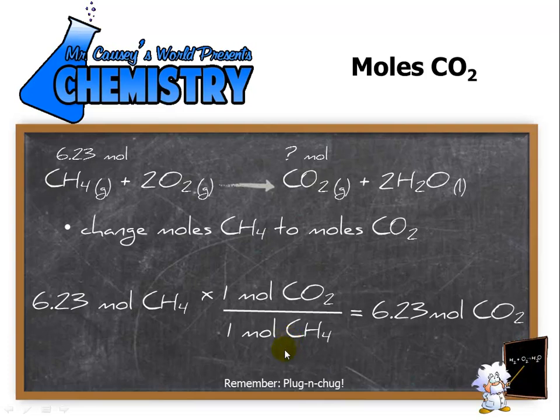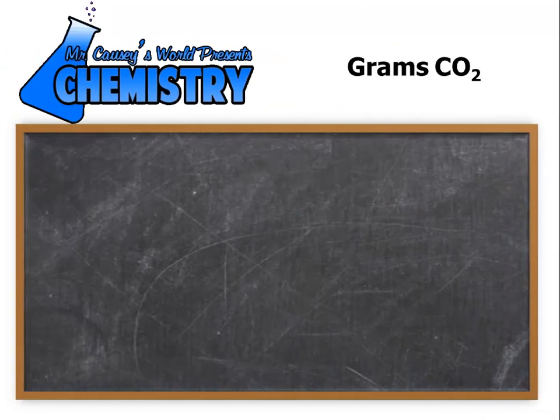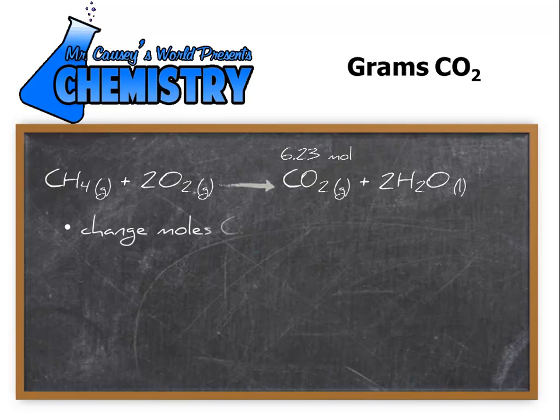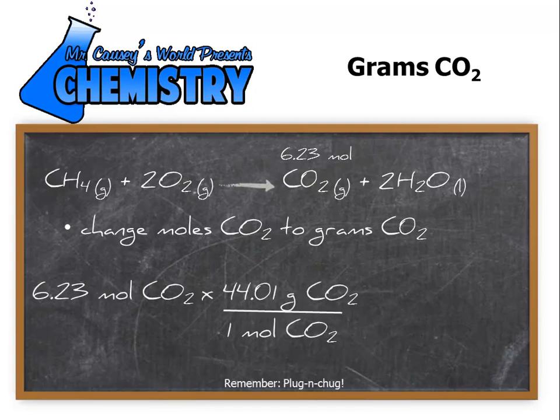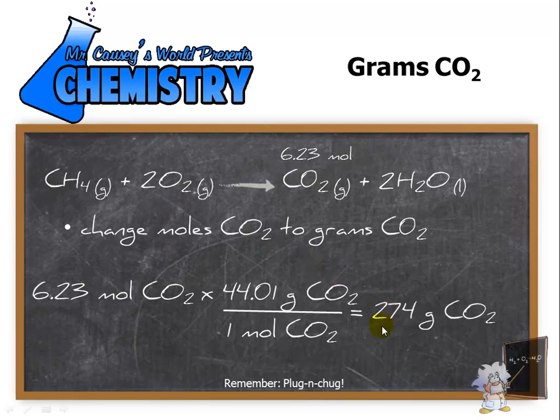It's a one to one ratio, and really we don't have to plug and chug on that one. We should do that in our heads. Let's go ahead and figure out the grams of carbon dioxide. Again, start with the balanced equation. Change moles of carbon dioxide to grams of carbon dioxide. We're going to do that by using the grams per mole of carbon dioxide. 6.23 moles of carbon dioxide multiplied by 44.01 grams of carbon dioxide. Plug and chug, and we have 274 grams.